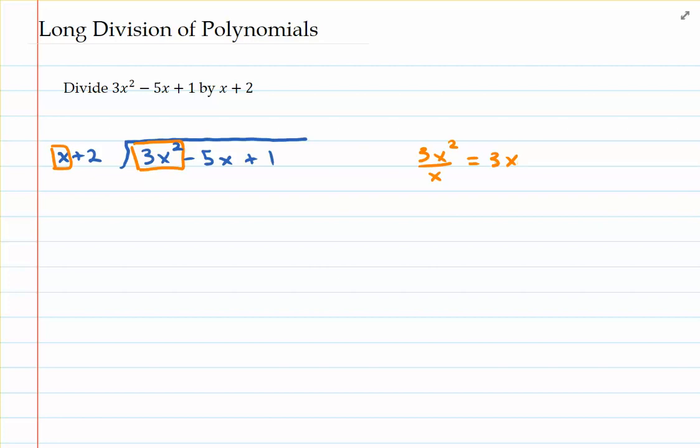The 3x is actually going to be our first term that we write on top of the division hut. And I'm going to write it on top of negative 5x, just to keep organized in column fashion. And the 3x represents our first term in our quotient. You may remember that an answer to a division problem is the quotient. And there's no difference here with long division of polynomials. We still get a quotient.